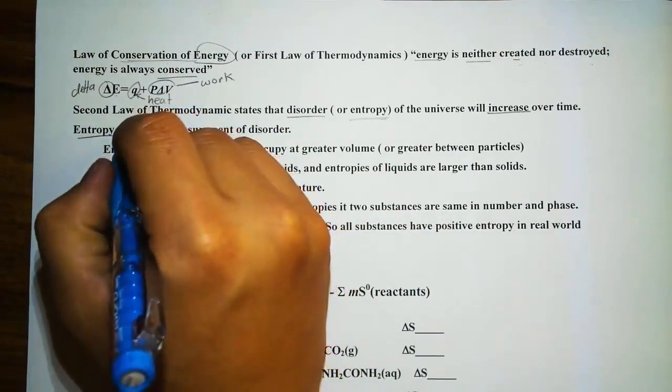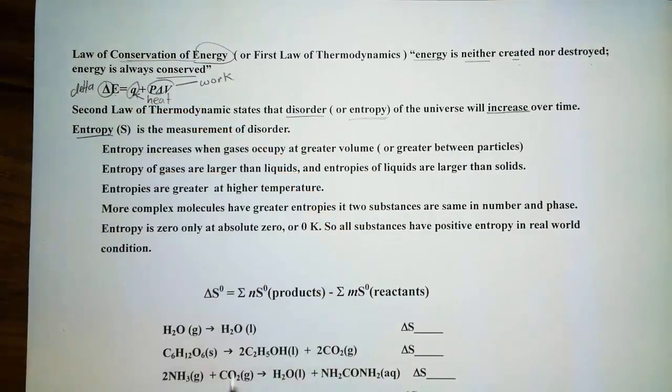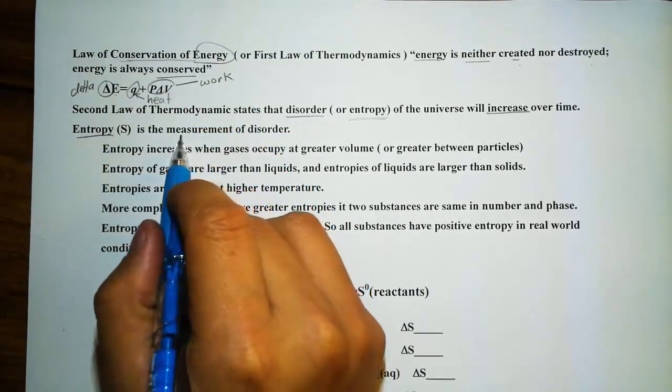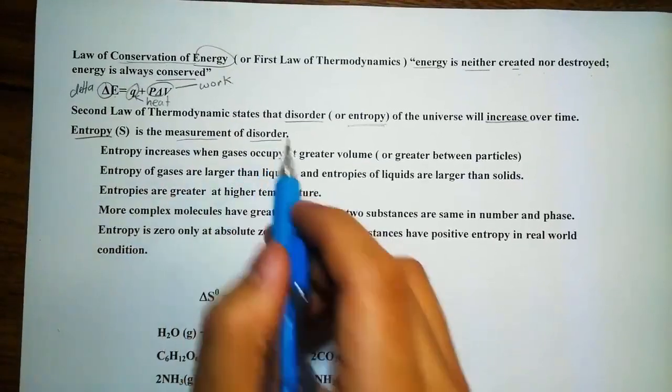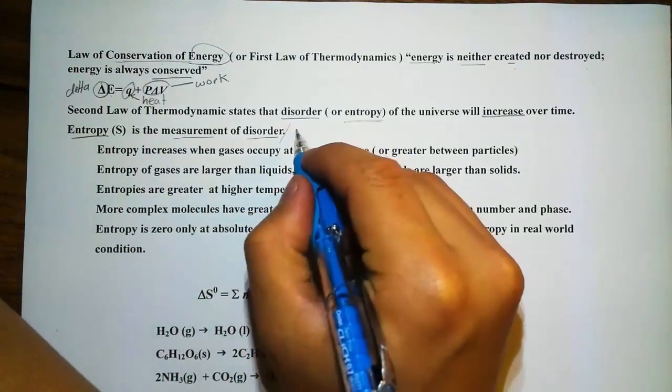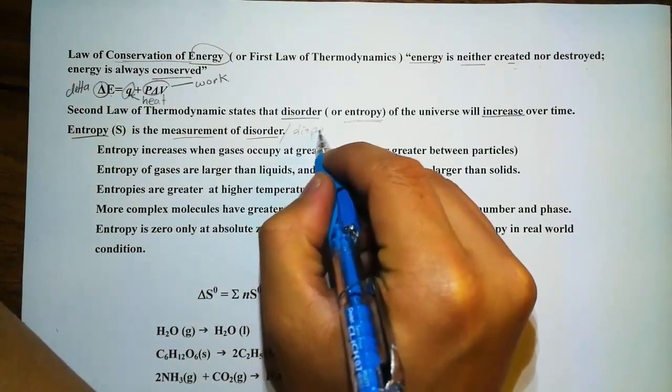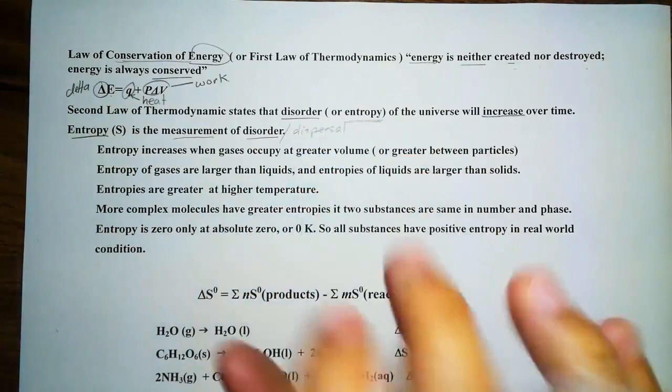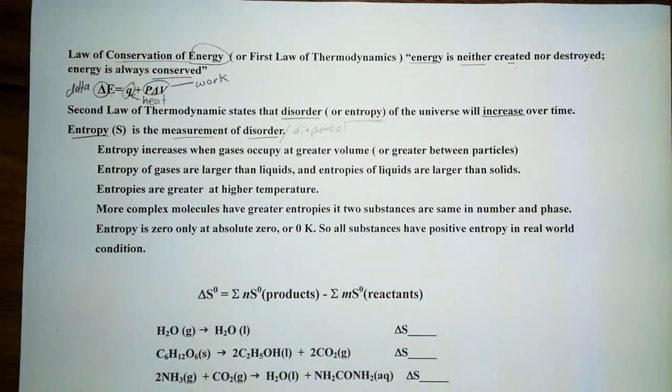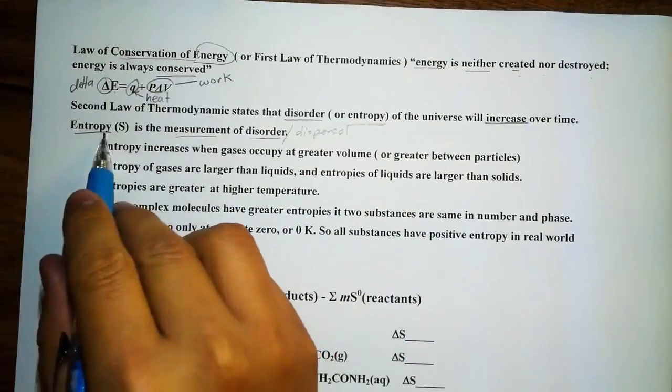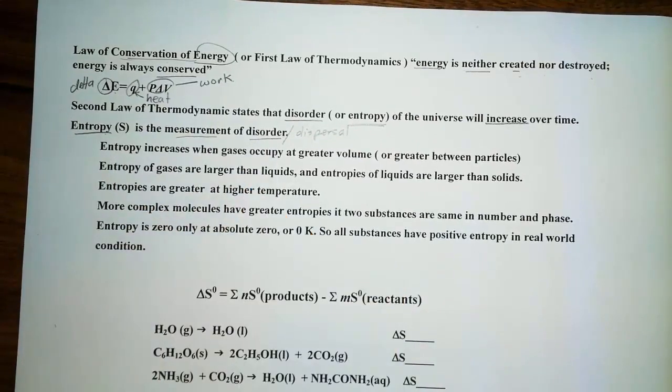So let's talk about this law specifically in terms of entropy. Now entropy is basically represented by the letter S. So entropy is the measurement of disorder. And sometimes they define it as dispersal. So how spread it is. So again, entropy is disorder.